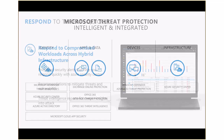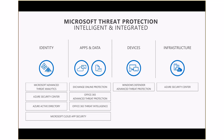Just a quick recap on the intelligence security graph: those 450 billion authentications, 400 billion emails scanned, and over a billion devices scanned — coupled with solutions that provide protection, detection, and response capabilities across devices, apps, data, and infrastructure — that is a very complete threat protection story. We believe we have a very unique and complete threat protection story, and we'd absolutely love for you to take this story to customers. If you need any further information or collateral on threat protection, we'll make this deck available along with end-to-end demonstration videos and a range of other resources.